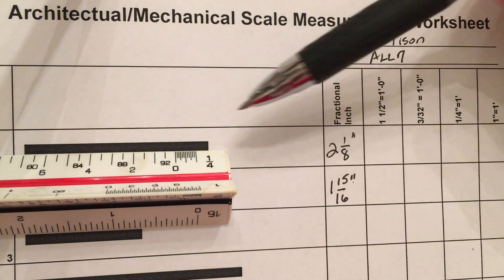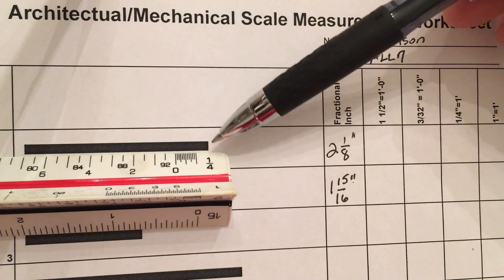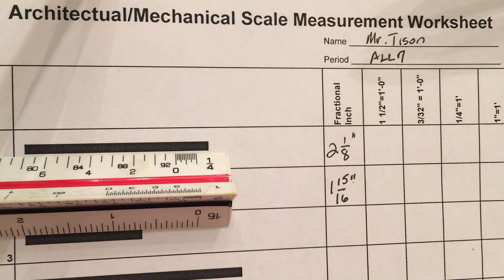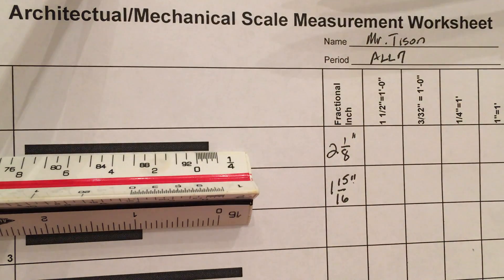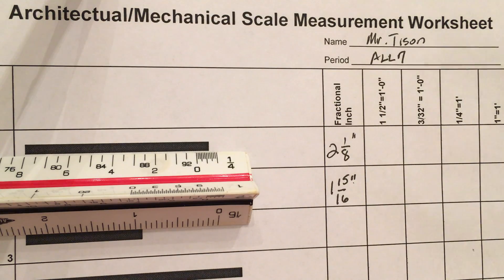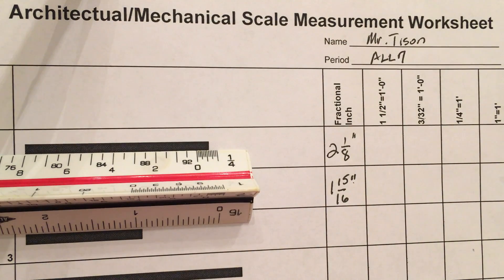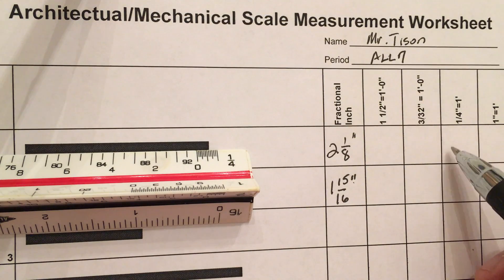If I put it on this one, my fine measurement extends, or the object extends past my fine measurement. So I'm going to put it on this number right here, which I know is 8. So I know this object, using the quarter inch equals a foot scale, measures 8 feet.